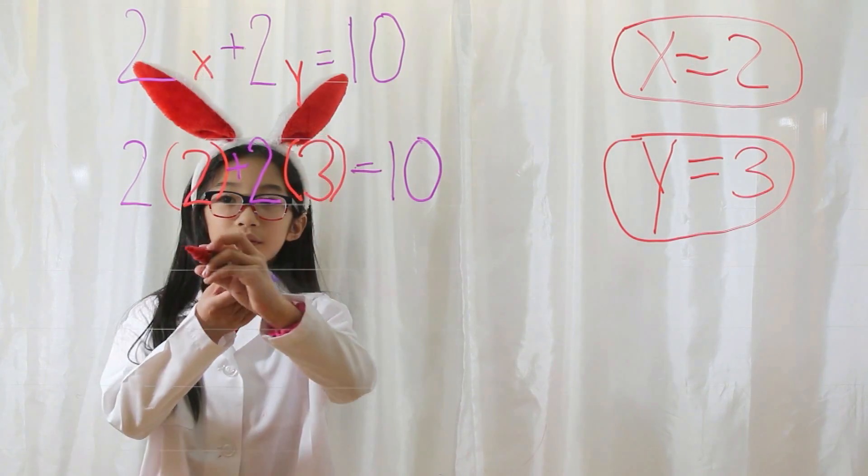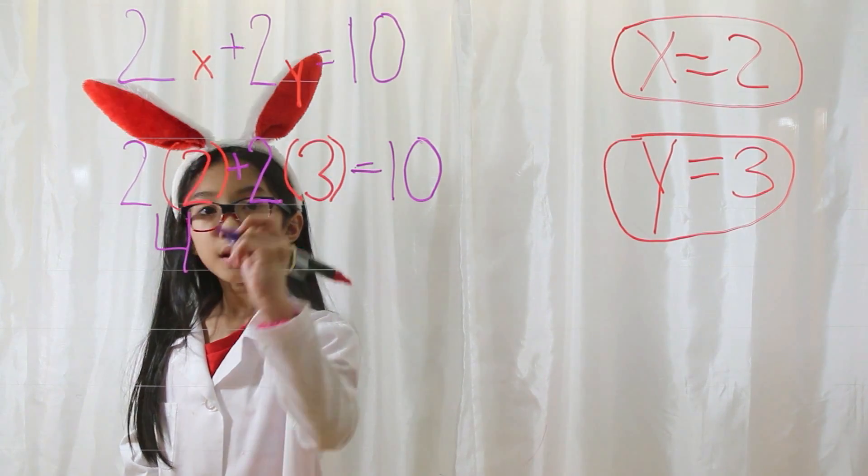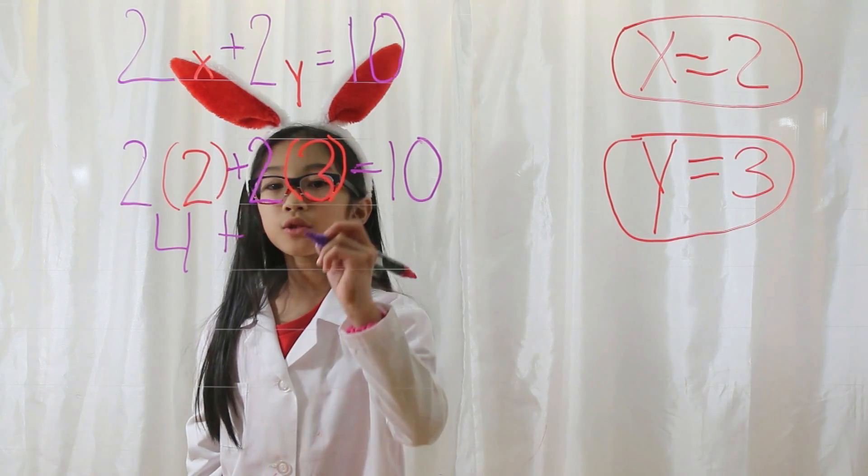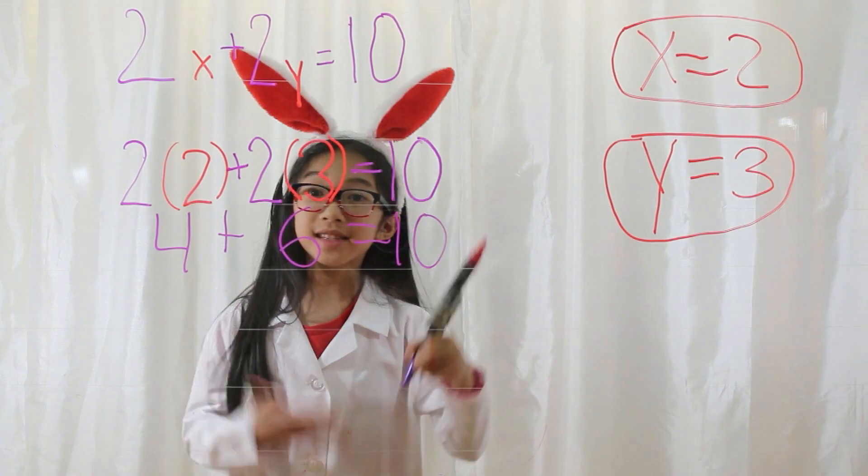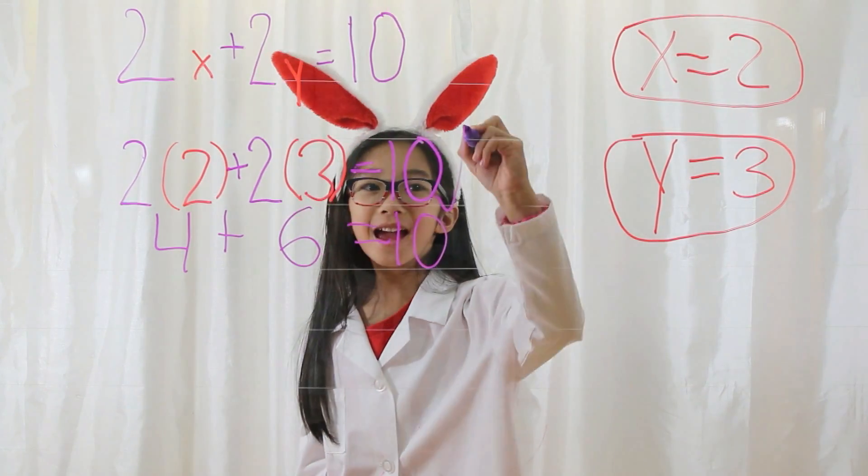2 times 2 is 4, plus 2 times 3 is 6, equals 10. 4 plus 6 is 10, right? Check!